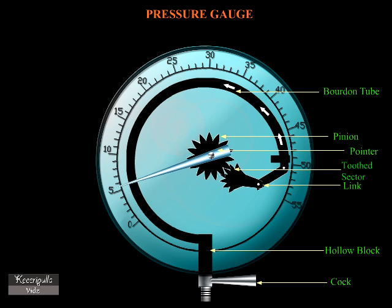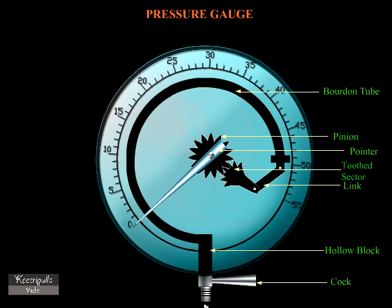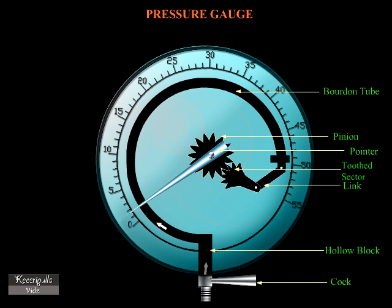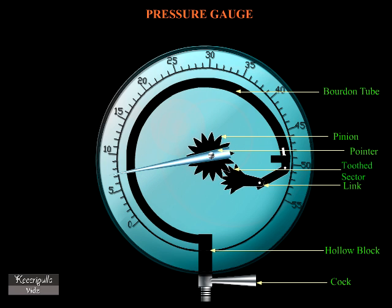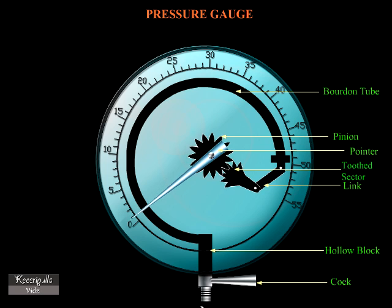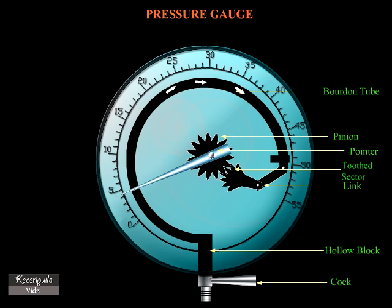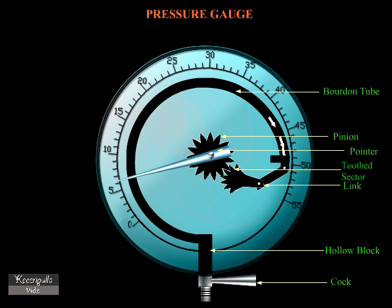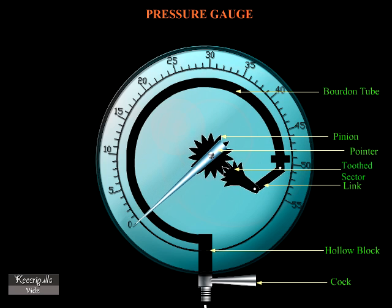The spring tube is surrounded by atmospheric air. The pressure in the interior of the tube is above that of the atmosphere. Hence, absolute pressure is equal to gauge pressure plus atmospheric pressure.